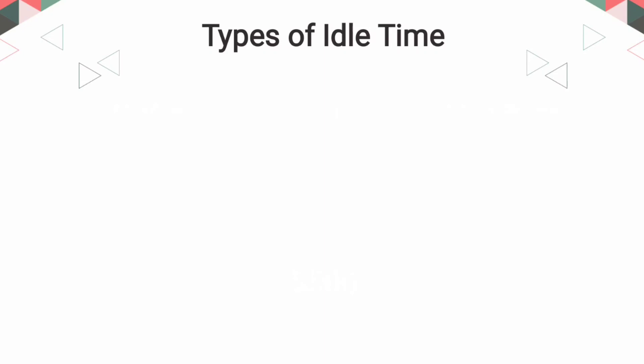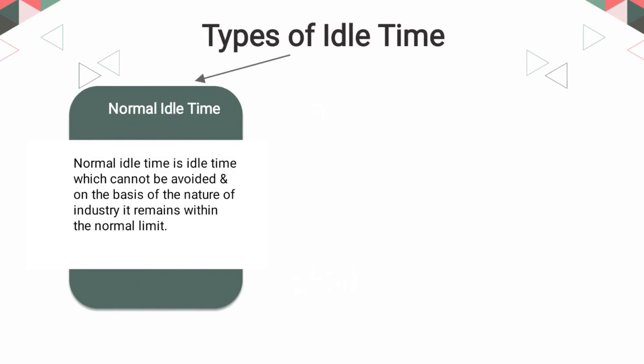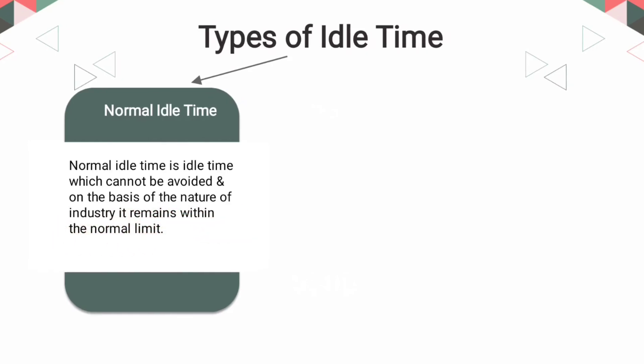Now let us see the types of idle time. Idle time is divided into two types. First is normal idle time — idle time which cannot be avoided and, based on the nature of the industry, remains within the normal limit. For example: lunch breaks, refreshment breaks, or loss of time due to waiting for instructions, operations, jobs, or materials.